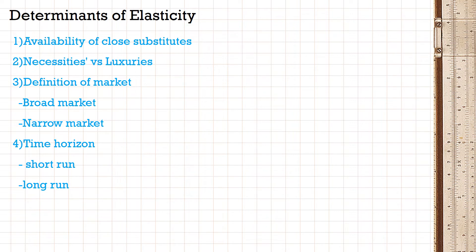The third determinant is the definition of market — there is a broad market category and a narrow market category. You can look at the same good in both markets; the change is only in your focus. Broad market categories have an inelastic demand curve — for example, there is no substitute for food, clothes, or shoes. But in the narrow market, the demand curve will be elastic because of availability of close substitutes.